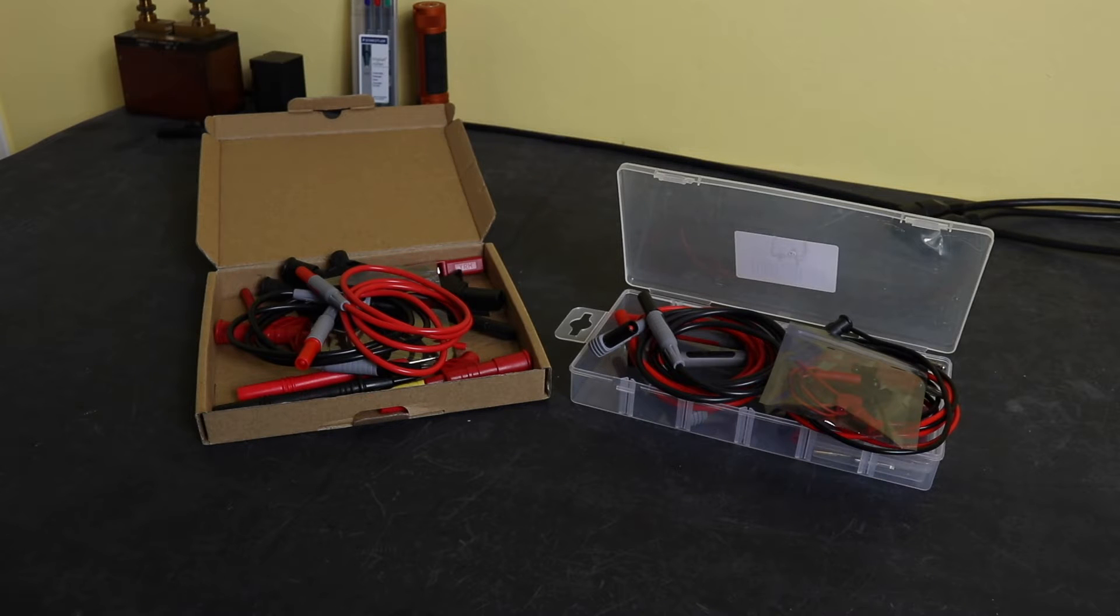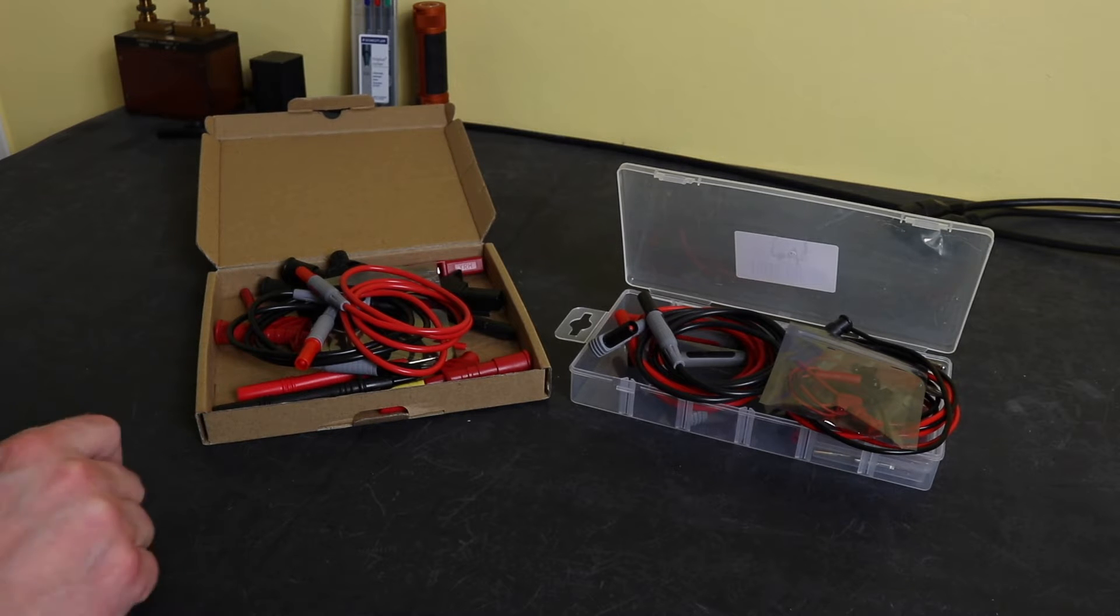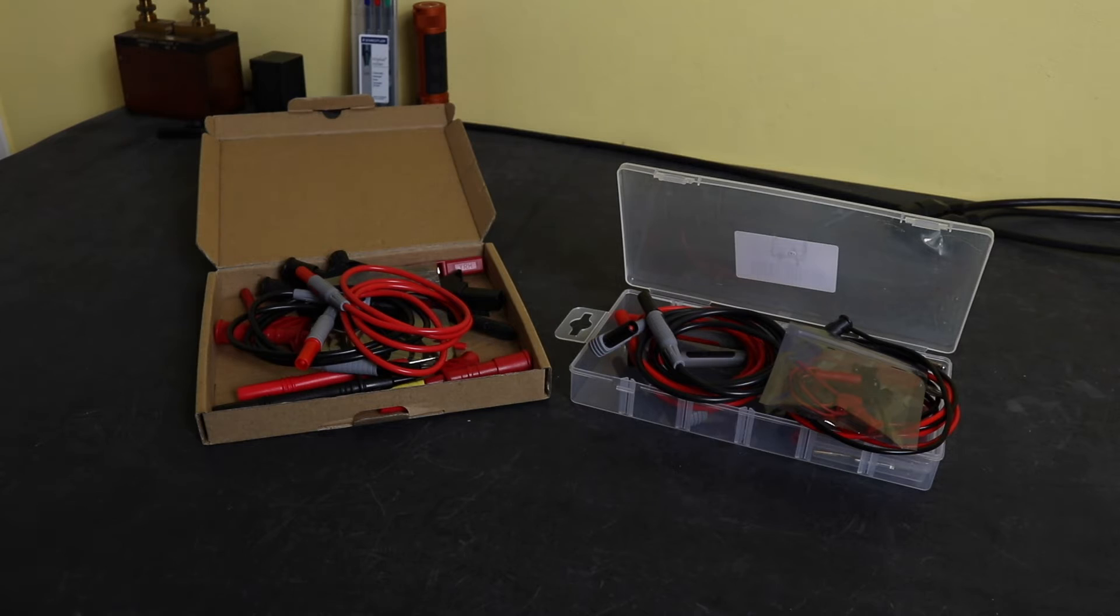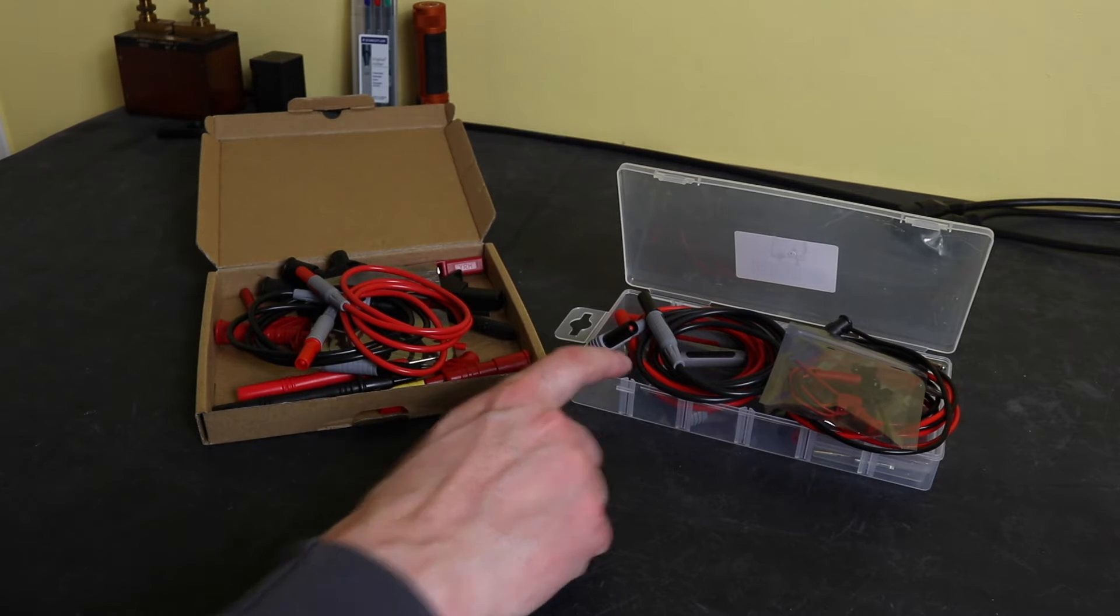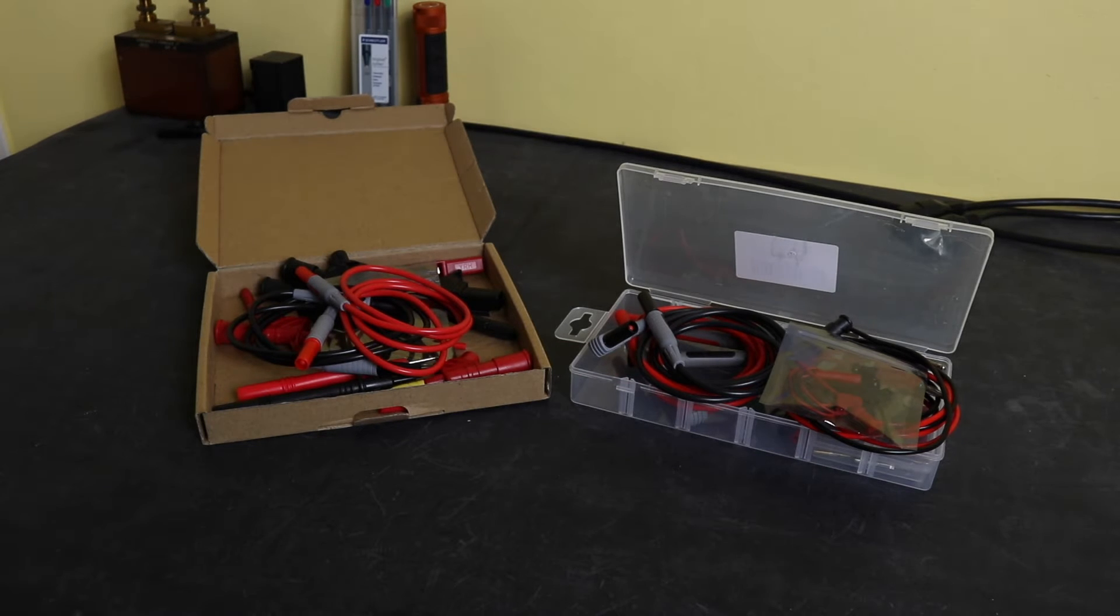The obvious first difference between these two sets is the cardboard box that the Prostor set comes in and the plastic case for the Clique set. If you're just purchasing as a replacement set for an existing instrument that has its own case, then it doesn't really matter how they're packaged. But if you want an extra set of leads that you're going to use across multiple instruments, the plastic case obviously gives you a few more advantages over the cardboard box.